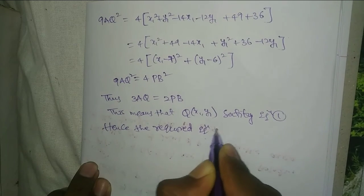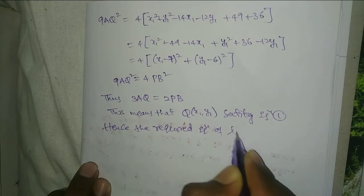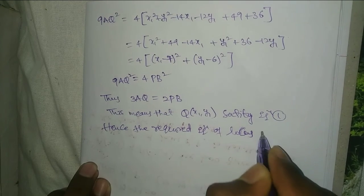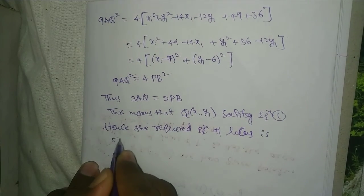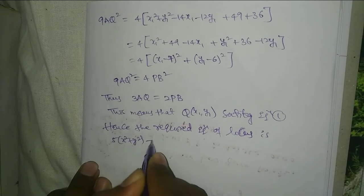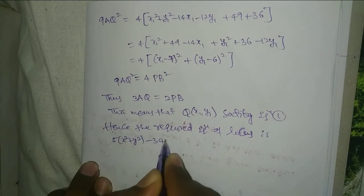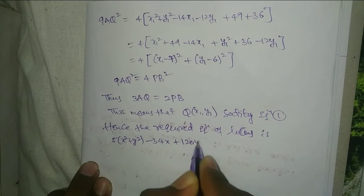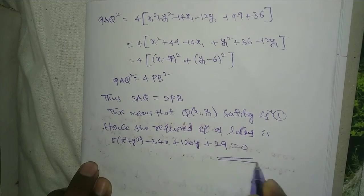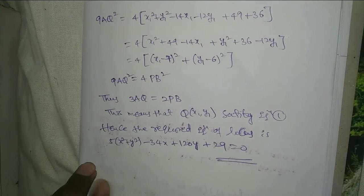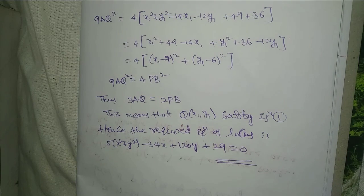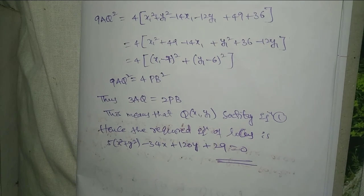Hence the required equation of the locus is 5(x² + y²) - 34x + 120y + 29 = 0. If you have any doubts, please comment. Please subscribe to my channel, like and share. Thank you.